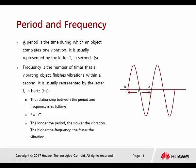Next are period and frequency. The period is the time during which an object completes one vibration — one full 360-degree cycle of the radio wave. It is usually represented by the letter T, measured in seconds. Frequency is the number of times a vibrating object finishes one vibration within a second, using the letter F in hertz. The relationship between period and frequency is F equals 1 divided by T. The longer the period, the slower the vibration.